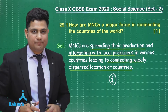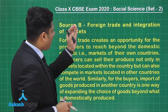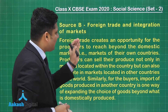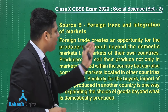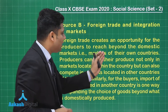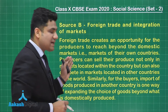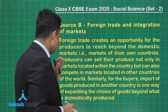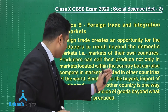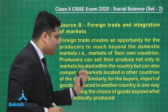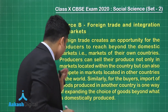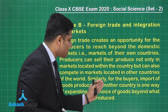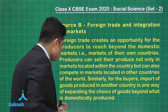Let's take source B. Source B is all about foreign trade and integration of markets. It says foreign trade creates an opportunity for the producers to reach beyond the domestic market, that is the markets of their own countries. Producers can sell their products not only in markets located within the countries but can also compete in markets located in other countries of the world. Similarly, for the buyers, import of goods produced in another country is one way of expanding the choice of goods beyond what is domestically produced.